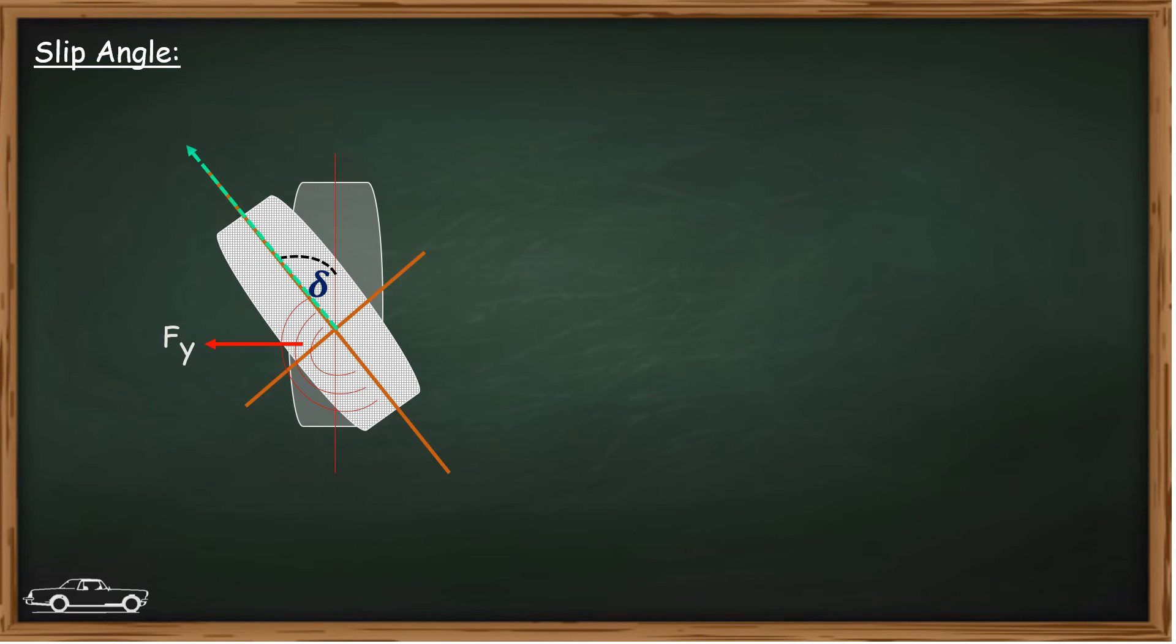These deformations happen at the contact patch. Making tangent to this direction we will get the actual heading direction of the tire, and the angle between this and the tire pointing direction is termed as the slip angle.